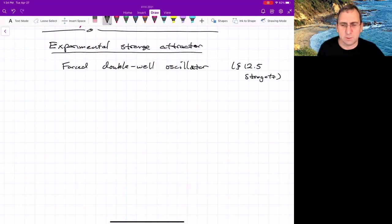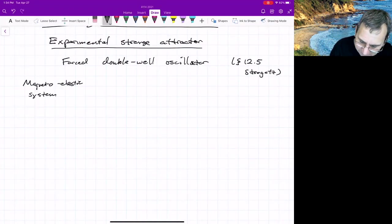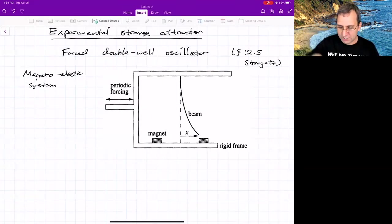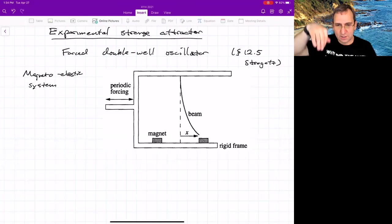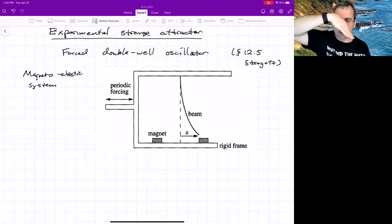The first study was of this magnetoelastic system, which I have in my lab. There's this beam, and the beam is attracted to two magnets. In its neutral position, if the magnets weren't there, this bending measured by this deflection X would be zero. But it's attracted, if you give it a little bit of a push, it wants to go to one magnet or the other. So the downward position is unstable.